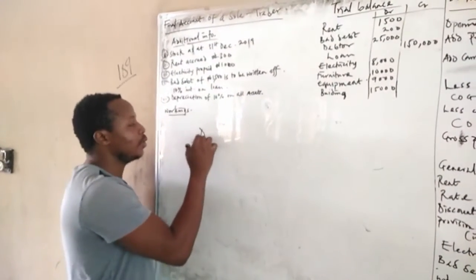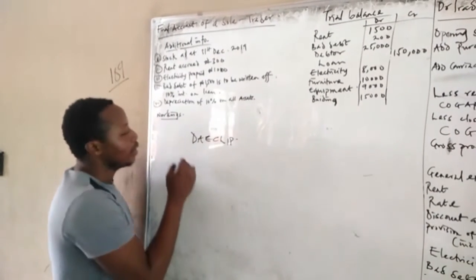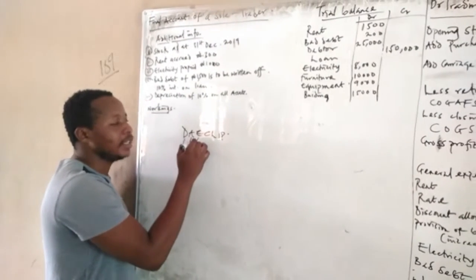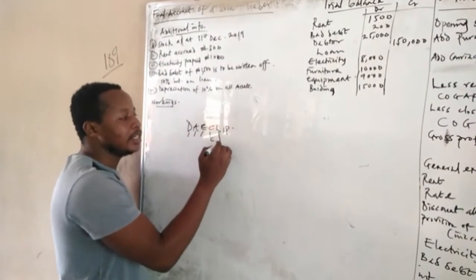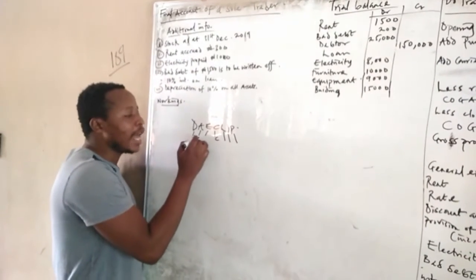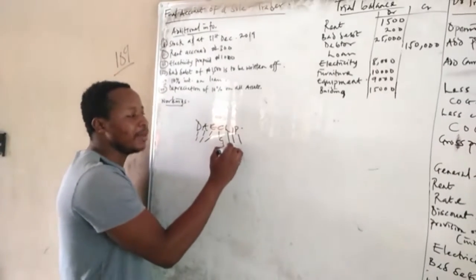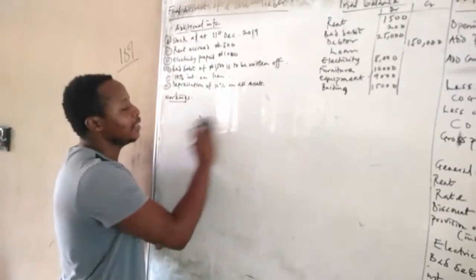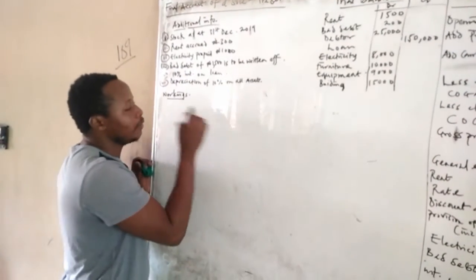Let me just run through this. The mnemonic is: D stands for debit, A stands for assets, E for expenses, C for credit, L for liability, I for income, P for provisions. So we debit all assets and expenses, and credit all liabilities, income, and provisions.